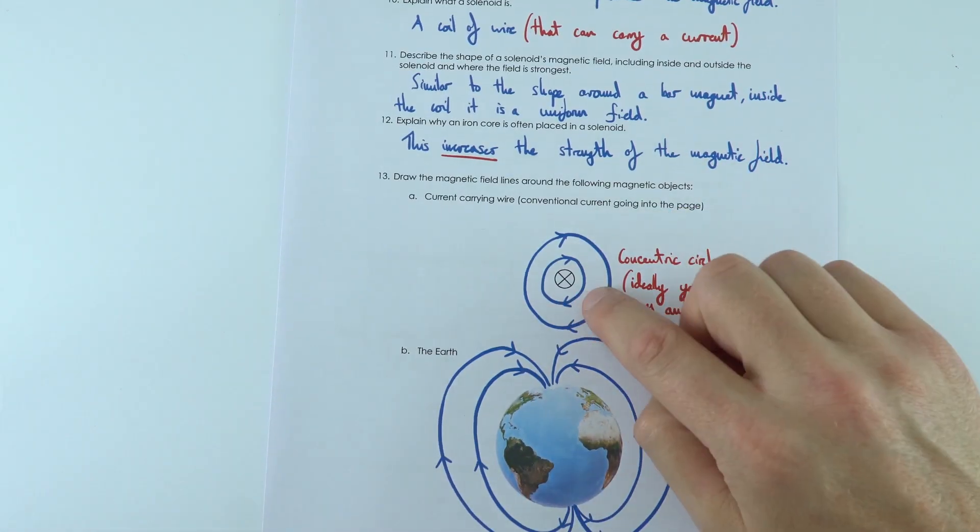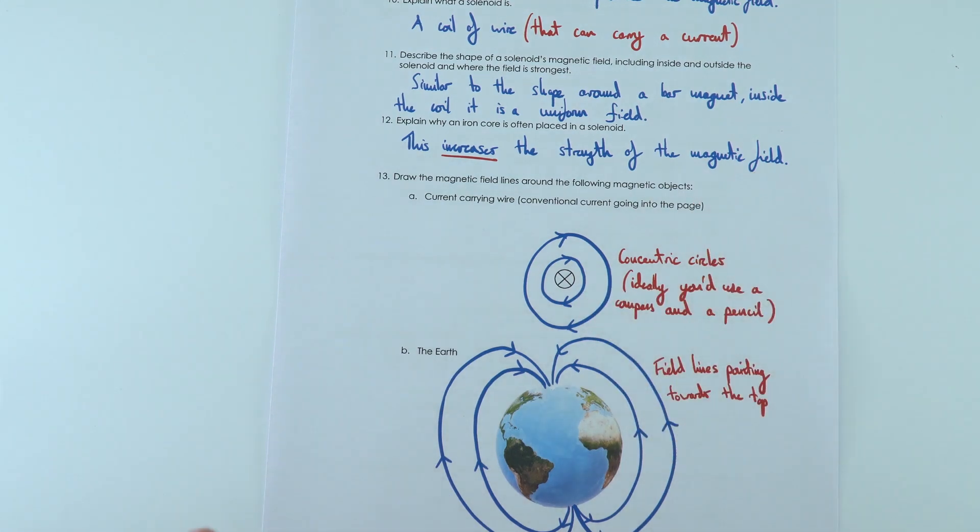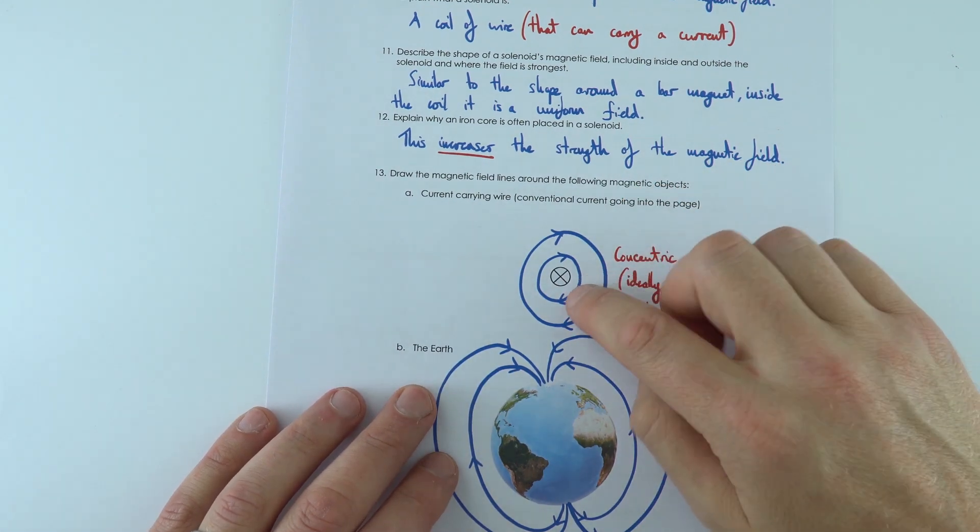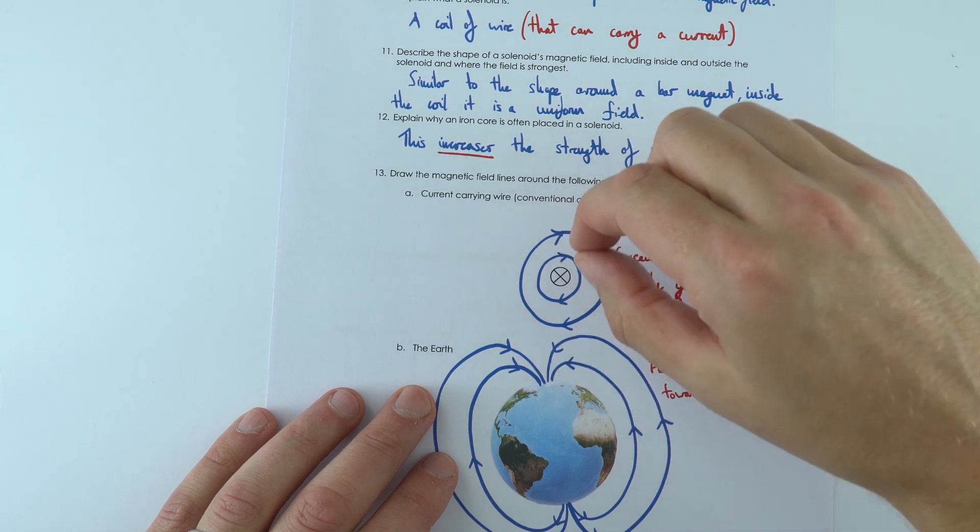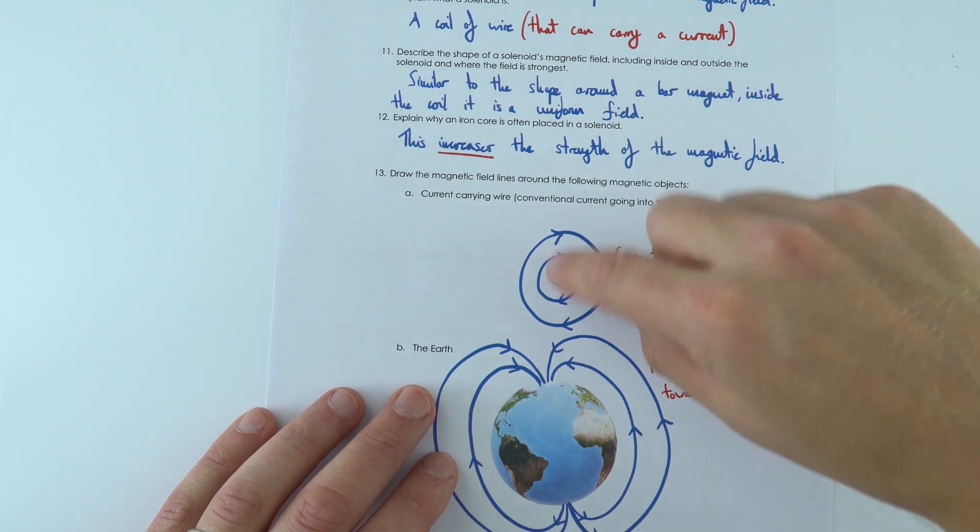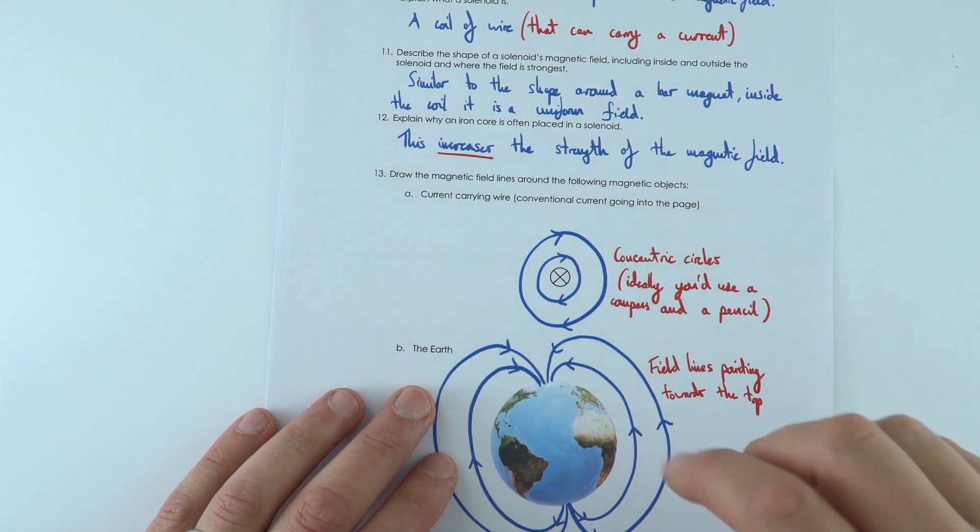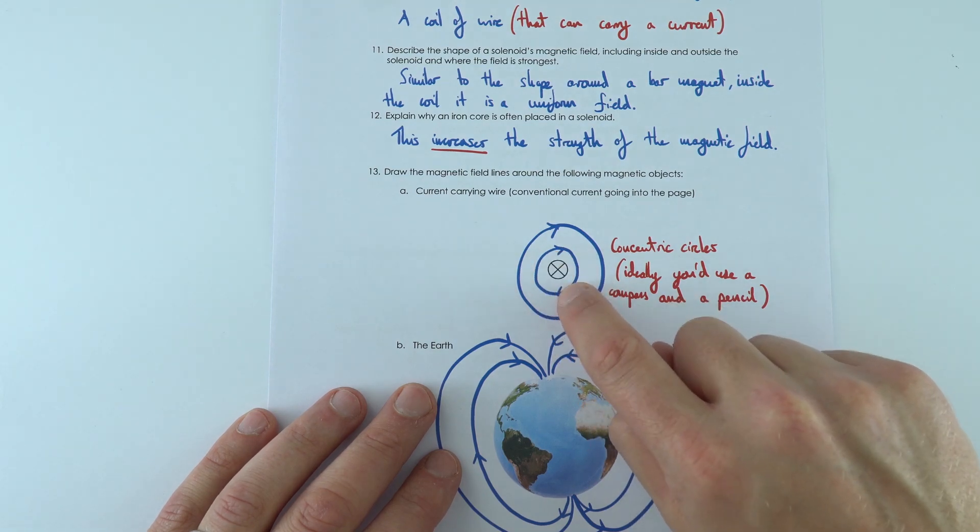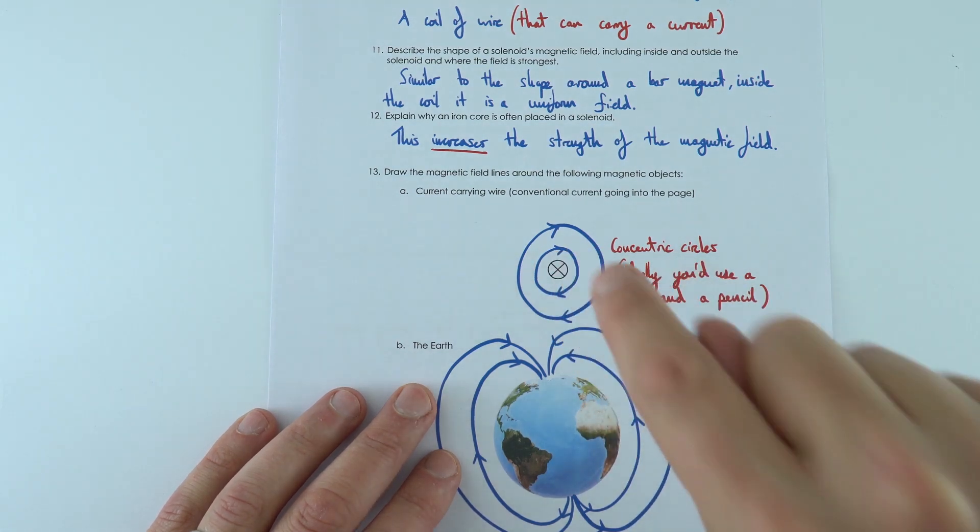Now the last part, I just did this freehand, but if you've got the ability, use your compass, use a pencil to draw some concentric circles, the ones around a wire get further apart. And this cross shape shows that the current is moving away from you.